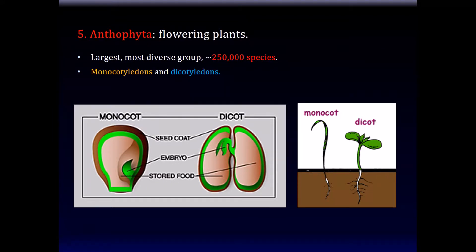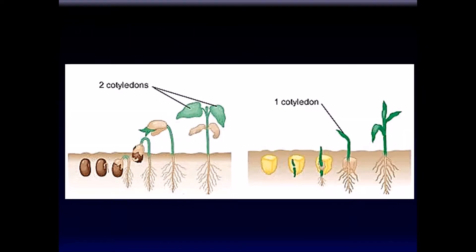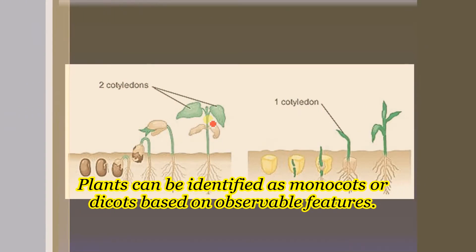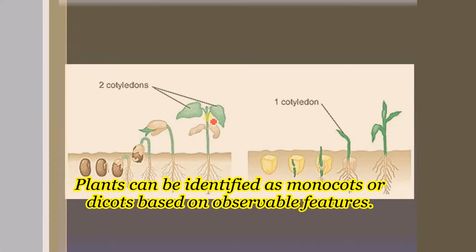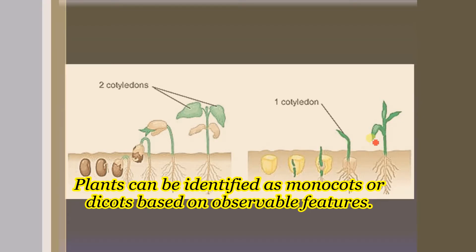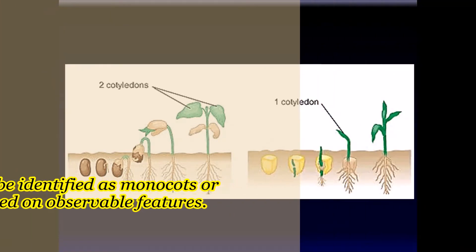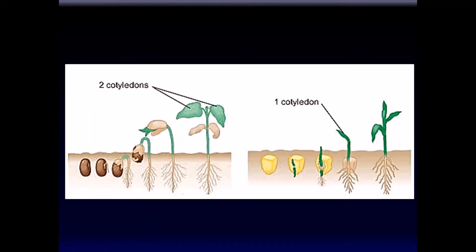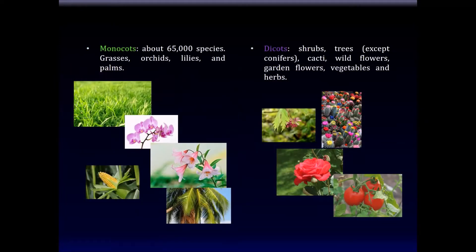You can frequently recognize whether a plant is a monocot — having one cotyledon in a seed — or a dicot — having two cotyledons in a seed. Two cotyledons typically result in plants that look like broad-leafed plants, whereas one cotyledon, like a corn plant, is different. Among the monocots, there are apparently some 65,000 species, including the grasses, orchids, lilies, and palms. Among the dicots are the shrubs, trees (except for the conifers), cacti, wildflowers, garden flowers, vegetables, and herbs.